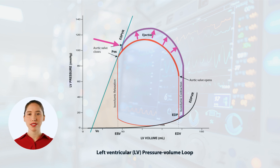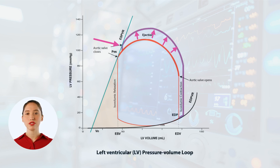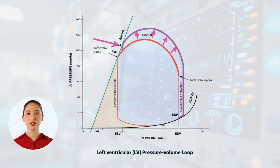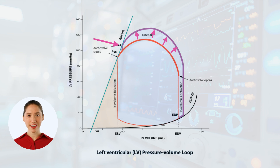To sum up, afterload is a critical factor in cardiac function, representing the stress on the ventricular wall during ejection. While the detailed calculation involves multiple variables, understanding that it's proportional to pressure during ejection helps simplify this complex concept. Thank you for watching!